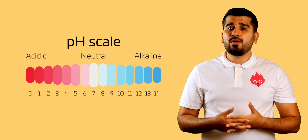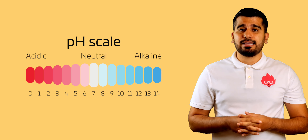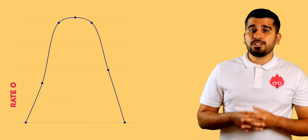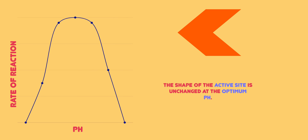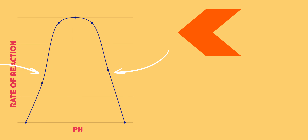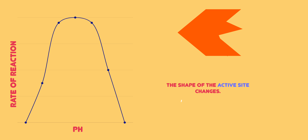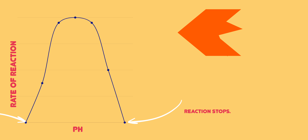Looking now at how pH affects enzyme action. Just like before, we can see a bell-shaped graph. The shape of the enzyme is unchanged at the optimum pH. If the pH is higher or lower than the optimum pH, the enzyme's active sites begin to change, preventing the substrate from binding, and so the reaction eventually stops.